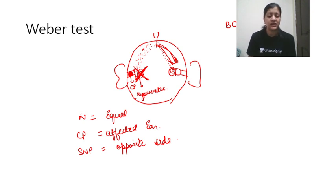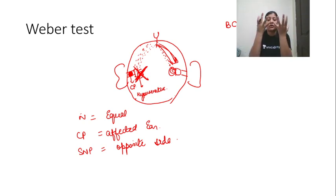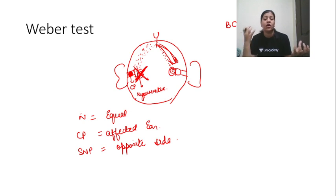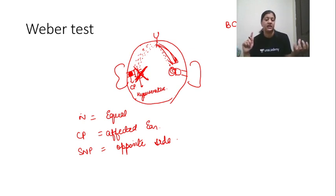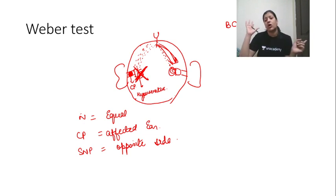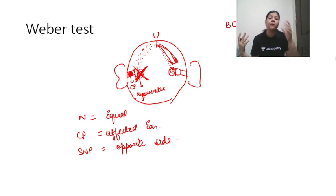In normal hearing, both cochleae pull the sound equally. In conductive pathology, the cochlea on the affected side becomes more sensitive and pulls the sound towards the affected side. In sensorineural pathology, the damaged cochlea is deaf and cannot pull the sound, so the opposite cochlea pulls it, and the sound gets lateralized towards the opposite side.